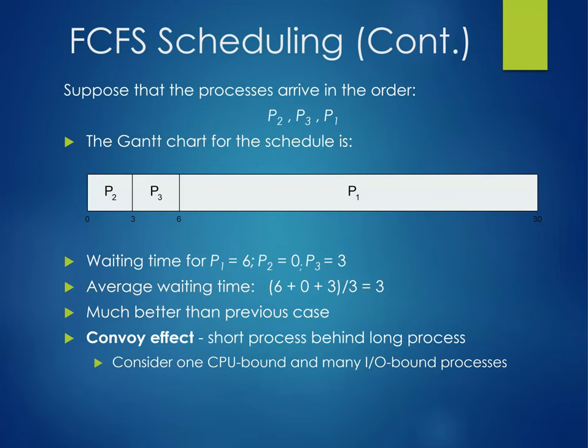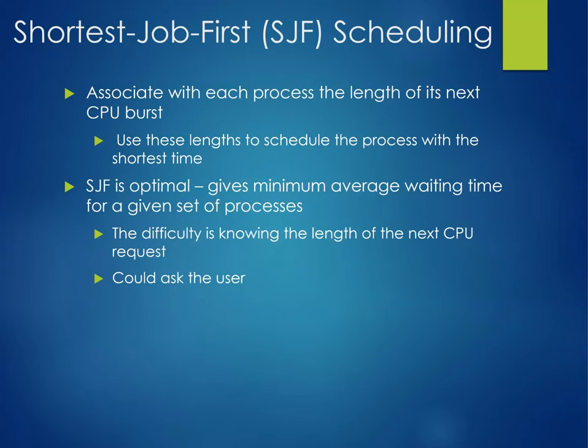The convoy effect is a short process behind a long process. Consider one CPU-bound and many IO-bound processes and you'll see the situation. Then there's the shortest job first scheduling — associate with each process the length of its next CPU burst, using these lengths to schedule the process with the shortest time.